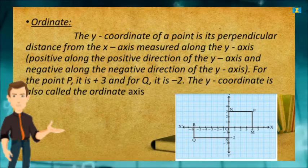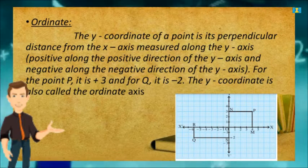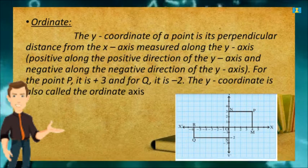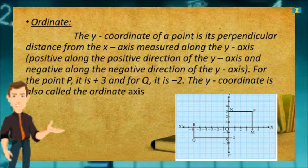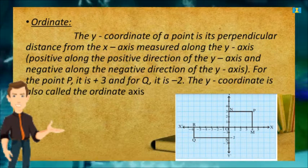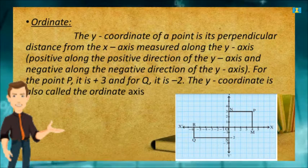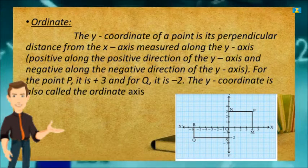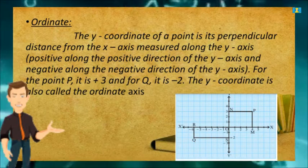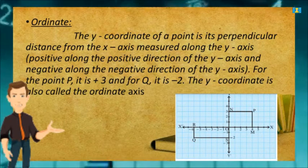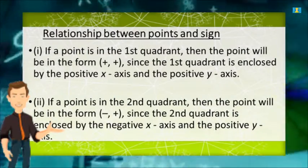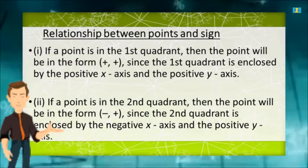The y-coordinate of a point is its perpendicular distance from the x-axis, measured along the y-axis — positive along the positive direction of the y-axis and negative along the negative direction. For point P it is positive 3, and for Q it is negative 2. The y-coordinate is also called the ordinate, as shown in the figure.